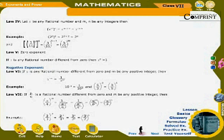Law 7: If p/q is a rational number different from 0 and m is any positive integer, then (p/q)^(−m) = 1/(p/q)^m = q^m/p^m = (q/p)^m. Example: (2/3)^(−3) = 2^(−3)/3^(−3) = 3³/2³ = (3/2)³.